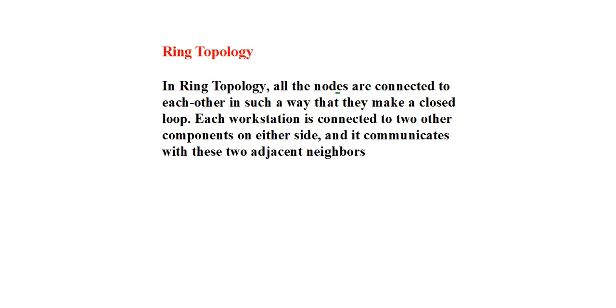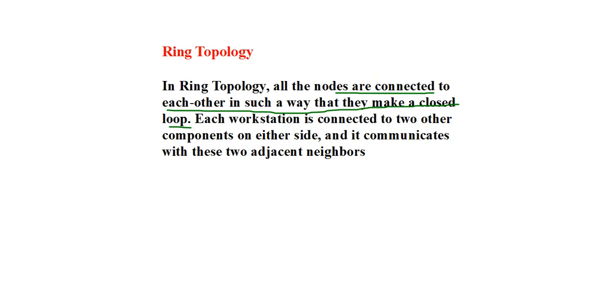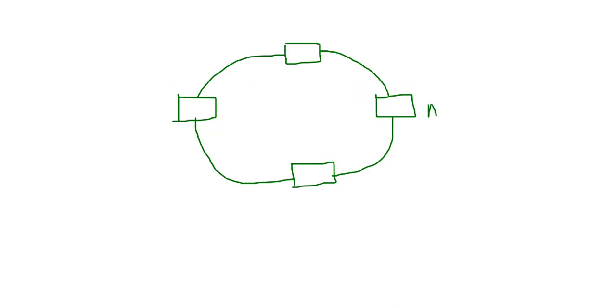Let us suppose that these are the nodes or workstations. In ring topology, all the nodes are connected to each other in such a way that they make a closed loop. Each workstation is connected to two other components on either side. For example, if this is workstation A, then A is connected to two other workstations — suppose B and C.